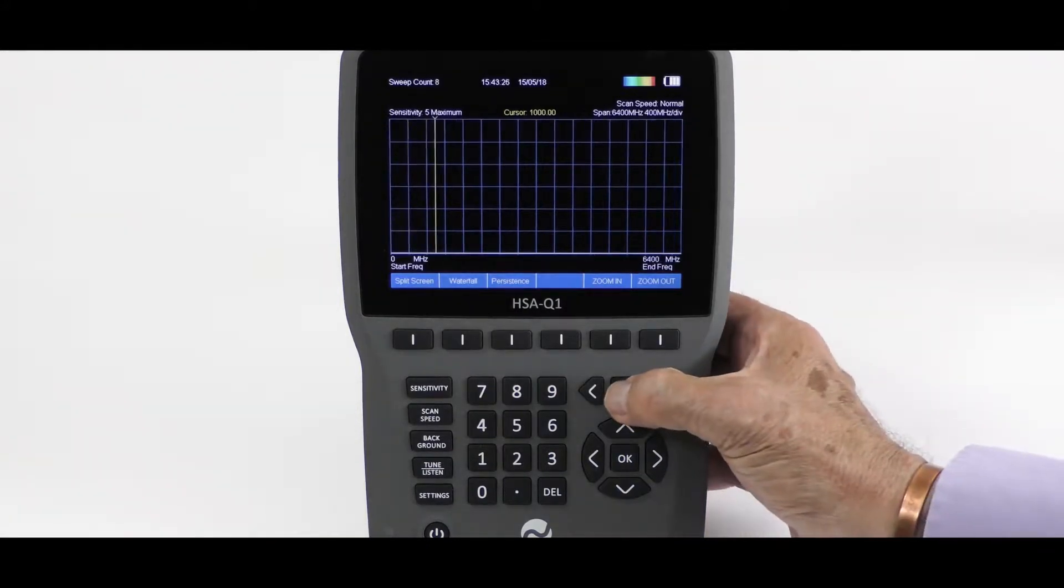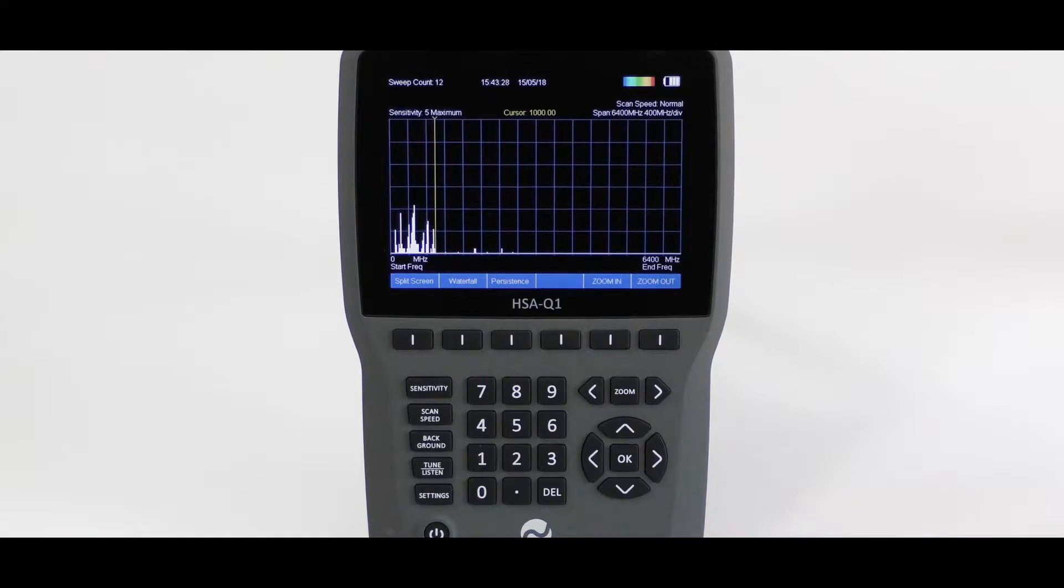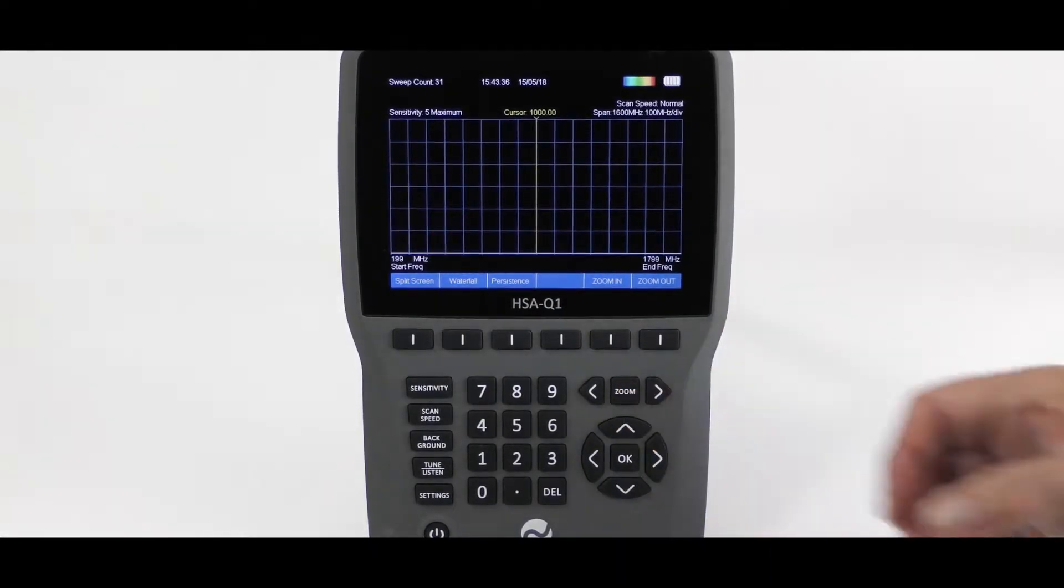We can zoom in, which halves the scan to 6.4, again to 3.2 gigahertz, once more to 1.6 gigahertz scan width.